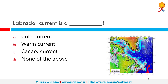Labrador current is a cold current. The Labrador current is a cold current of the North Atlantic Ocean which flows from the Arctic Ocean south along the coast of Labrador and passes through Newfoundland, continuing south along the east coast of Nova Scotia.